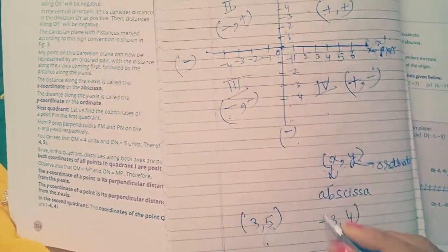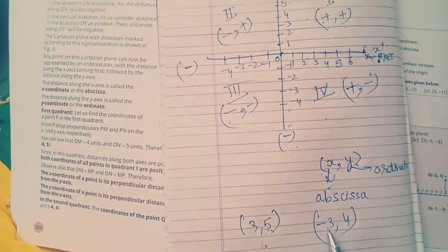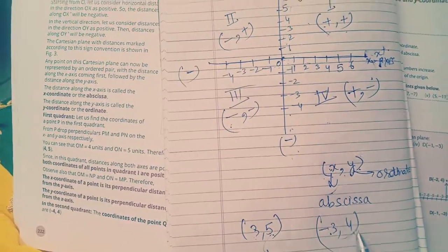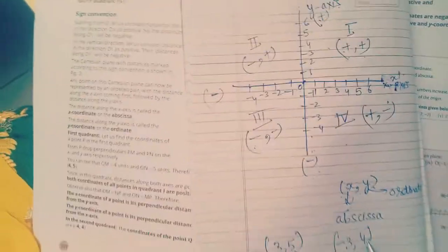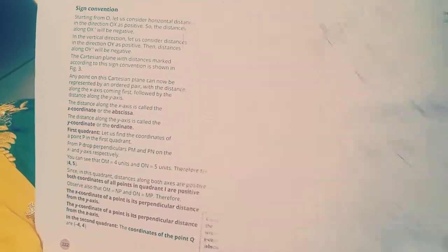Suppose I have point (-3, 4). So here x is negative and y is positive. So this will lie in second quadrant. I think this concept is clear to you. Now, next exercise.